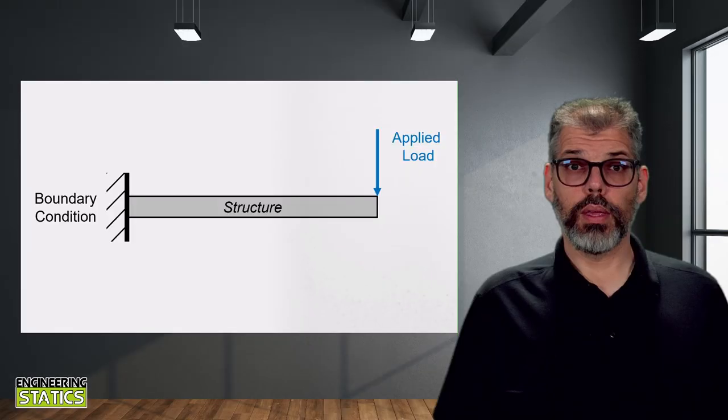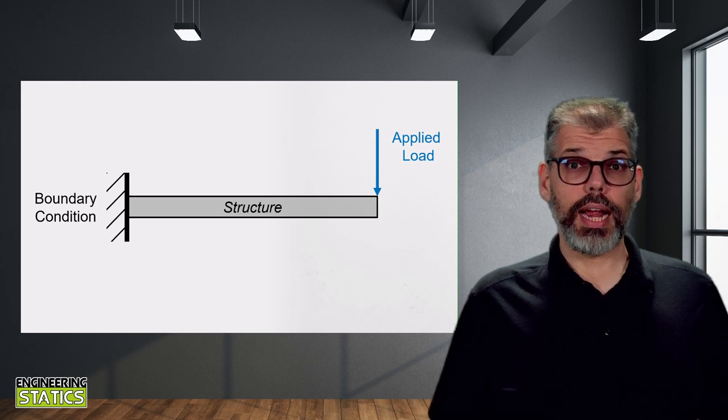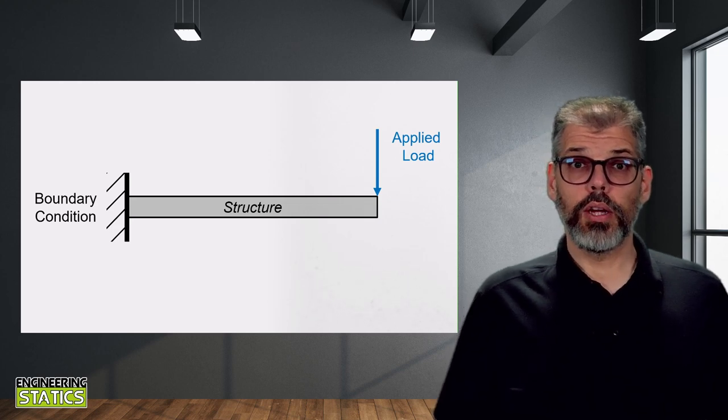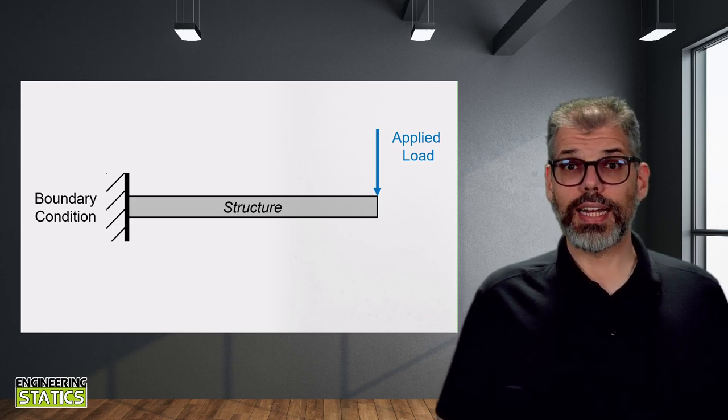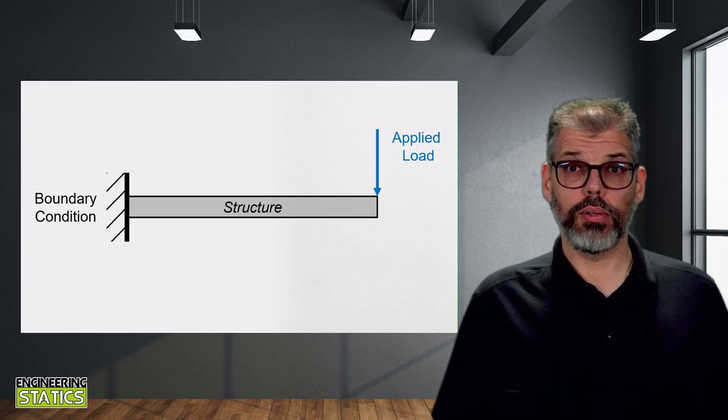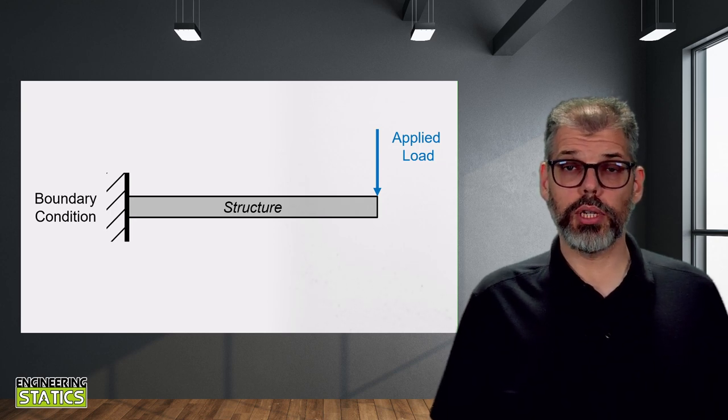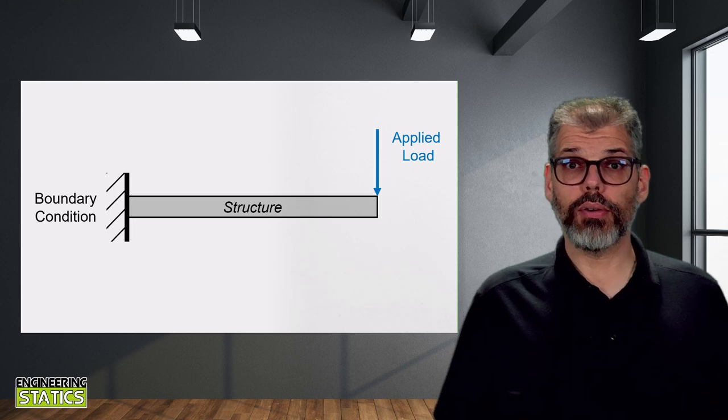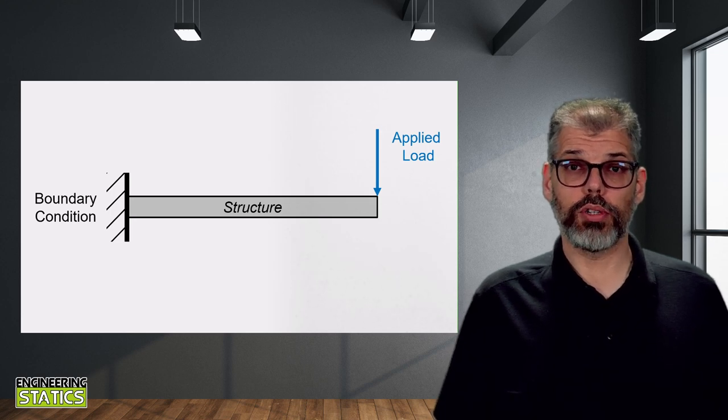So what is the difference? The answer to this is related to the concept of a load path. So let's start by defining this. The function of a structure is to carry and transmit loads. So you can view a structure as a connection between externally applied loads and supports or boundary conditions. The load path refers to how that load is transmitted through the structure.